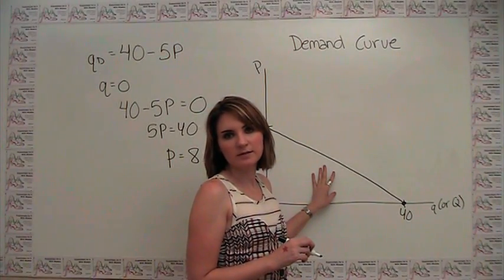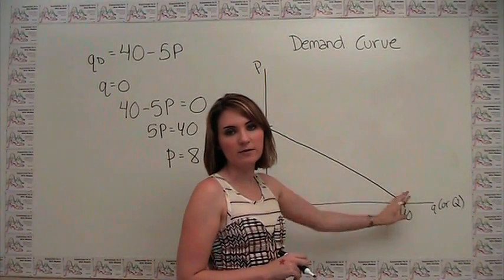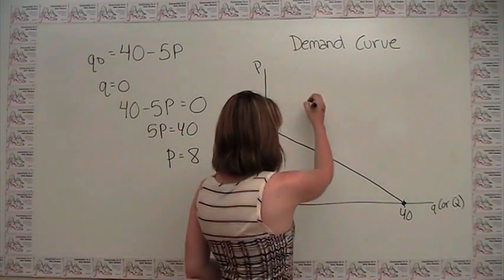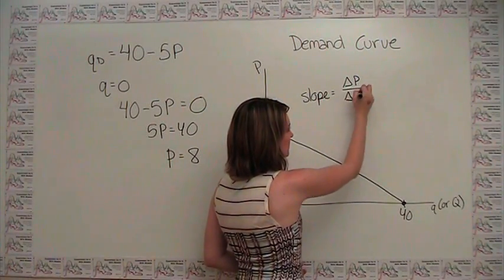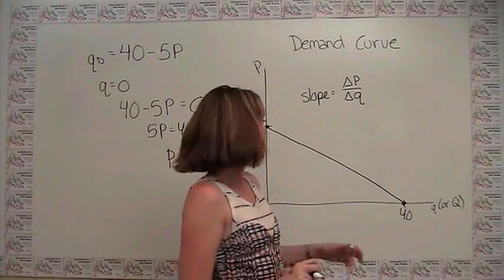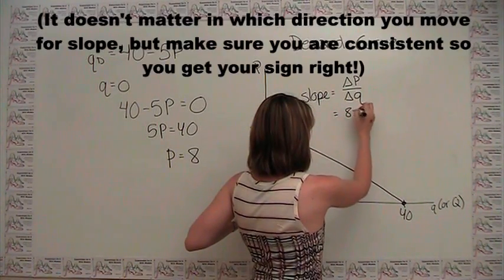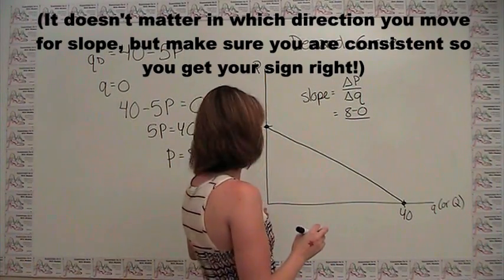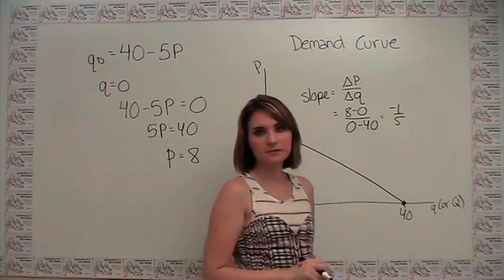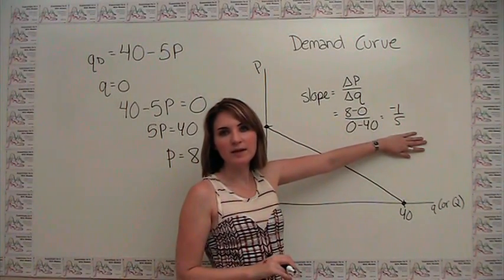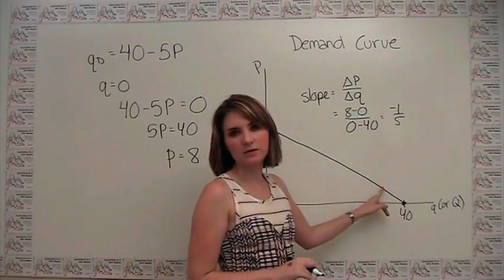Let's think about what the slope of this demand curve is. We say that slope is represented by the change of whatever is on the y-axis divided by the change in whatever is on the x-axis. So in this case, we could say that the slope is equal to the change in p divided by the change in q, or say 8 minus 0 divided by 0 minus 40, which is negative 1 fifth. You'll notice that when we have the law of demand being satisfied, we get a demand curve that has a negative slope, which corresponds to the demand curve sloping downwards like we see here.